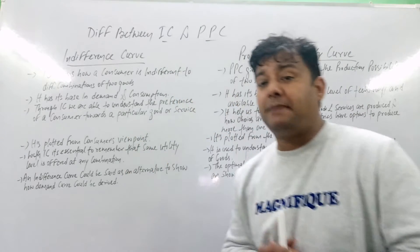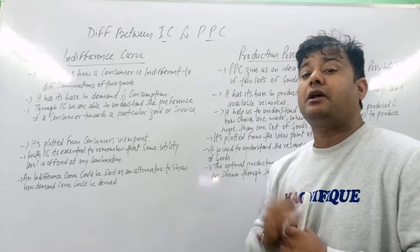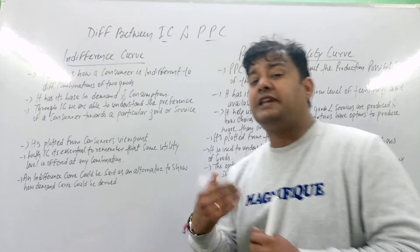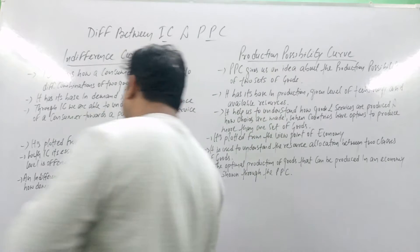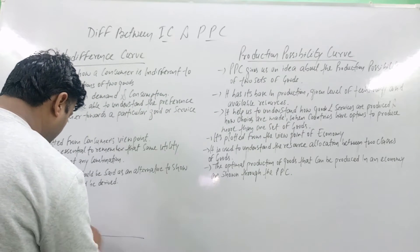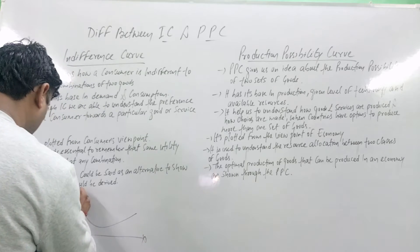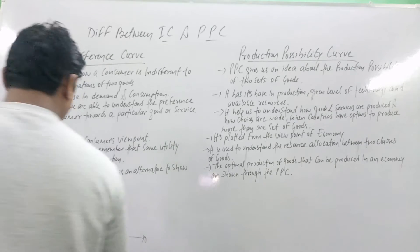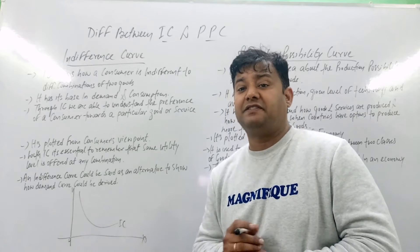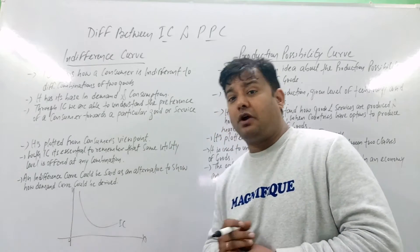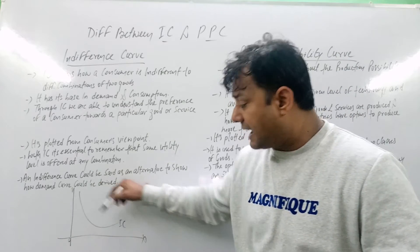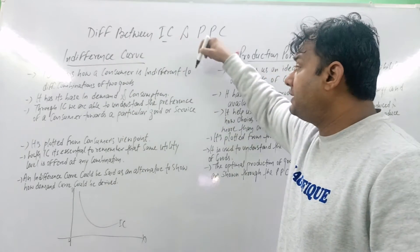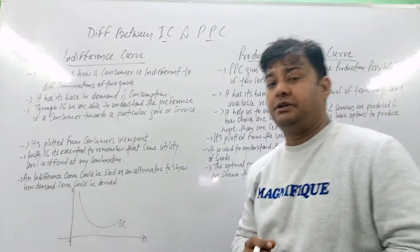The combination of two goods — I repeat, the combination of two goods — is what we focus on in the indifference curve. Here, looking at the IC diagram, the two different combinations of goods X and Y are given. It shows how the consumer is indifferent to the different combinations of those two goods.